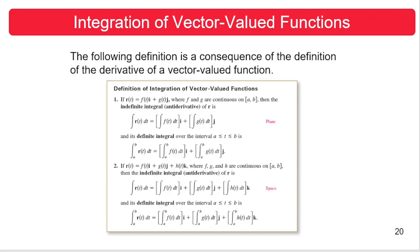The following definition is a consequence of the definition of the derivative of a vector-valued function. Number 1, in two-dimensional space, if r of t is f of t i plus g of t j, where f and g are continuous on the closed interval [a, b], then the indefinite integral or anti-derivative of r is given by this equation. The integral of r of t dt equals the integral of the first component f of t dt times i, plus the integral of the second component g of t dt times j.